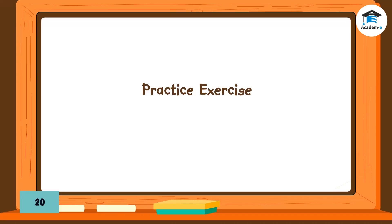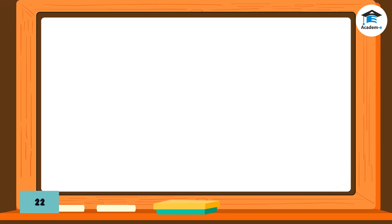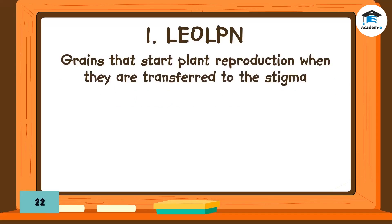Practice exercise: Rearrange the letters in each item to identify the word being described. Number 1: Grains that start plant reproduction when they are transferred to the stigma. Answer: Pollen.